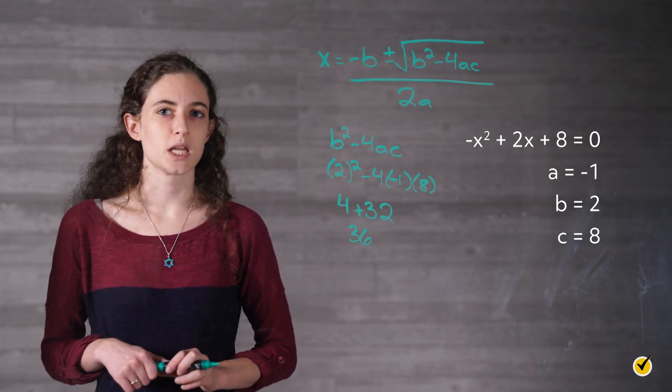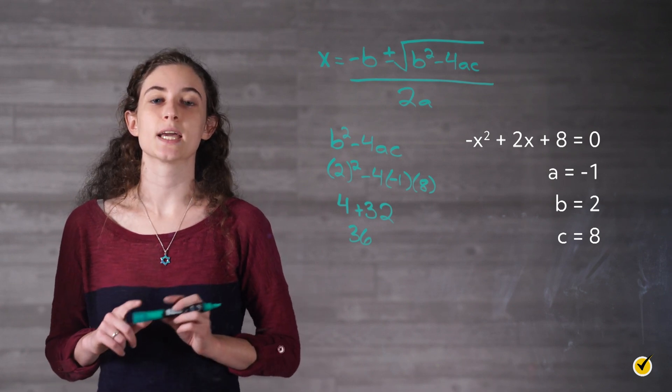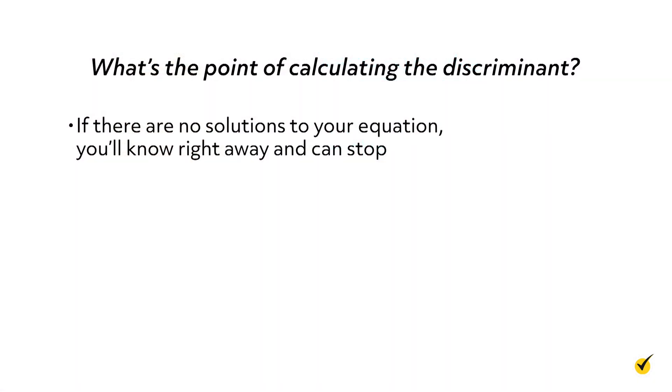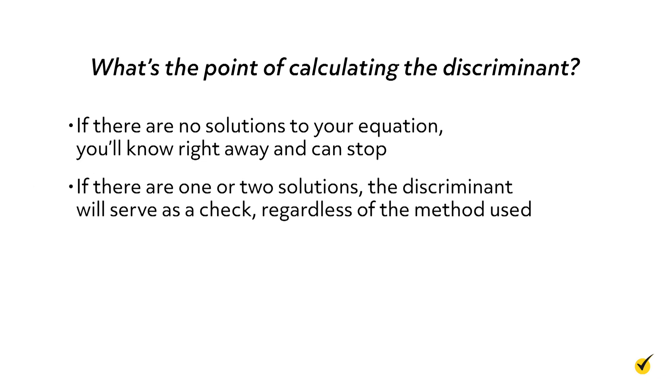What's the point of calculating the discriminant? If you get in the habit of checking it every time, a few things happen. If there are no solutions to your equation, you'll know right away and can stop. If there are one or two solutions, the discriminant will serve as a check, regardless of the method used. If you use the quadratic formula, a chunk of it is already calculated.